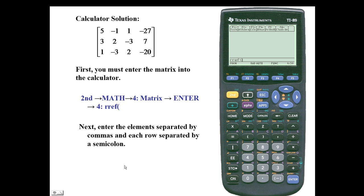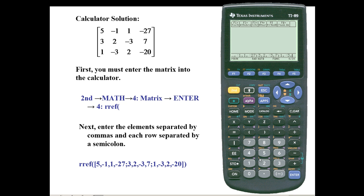Next, enter the elements separated by commas and each row separated by semicolon. To begin the matrix, use a begin bracket, which is located above the comma and is a second function. Enter the elements of the matrix separated by commas and each row separated by semicolon. Close off the matrix with the end bracket, located above the division symbol as a second function. Close with a parenthesis and press enter.